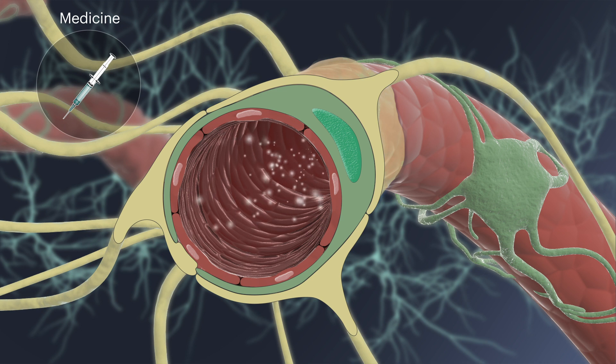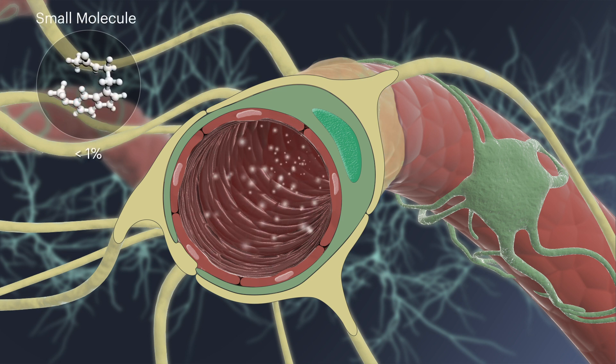However, the blood-brain barrier's protective function also blocks potentially helpful drugs from entering the brain. For most drugs taken orally or by injection, less than 1% of each dose crosses the blood-brain barrier to enter the brain.